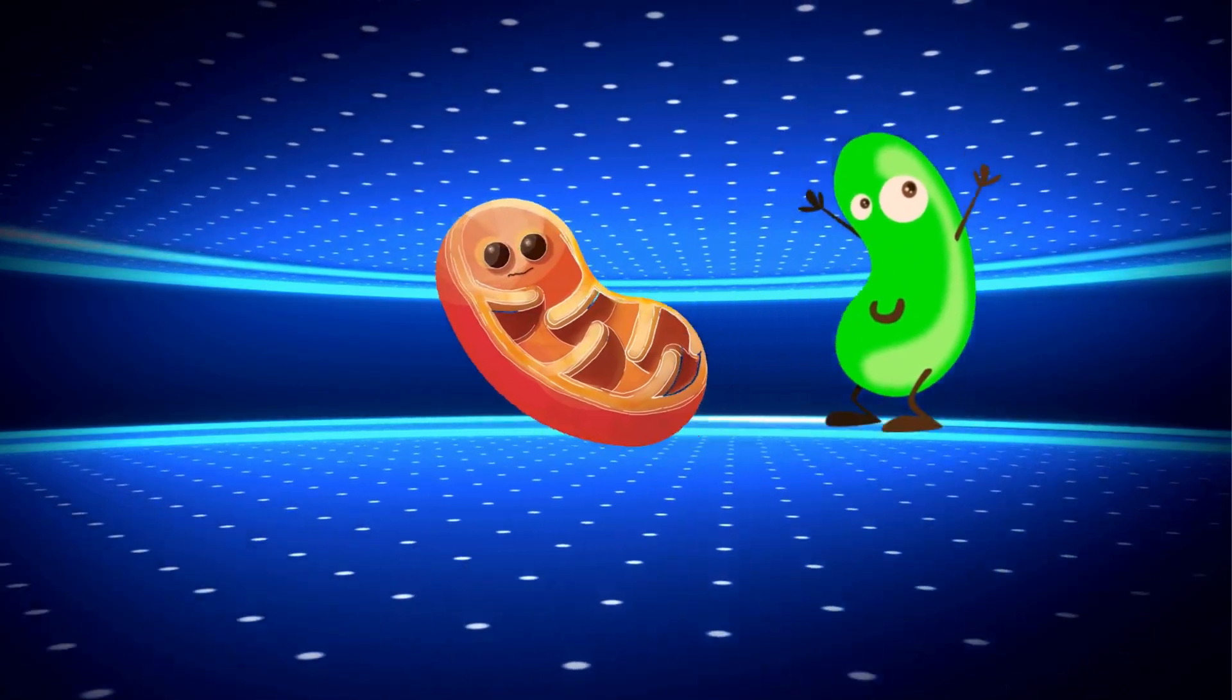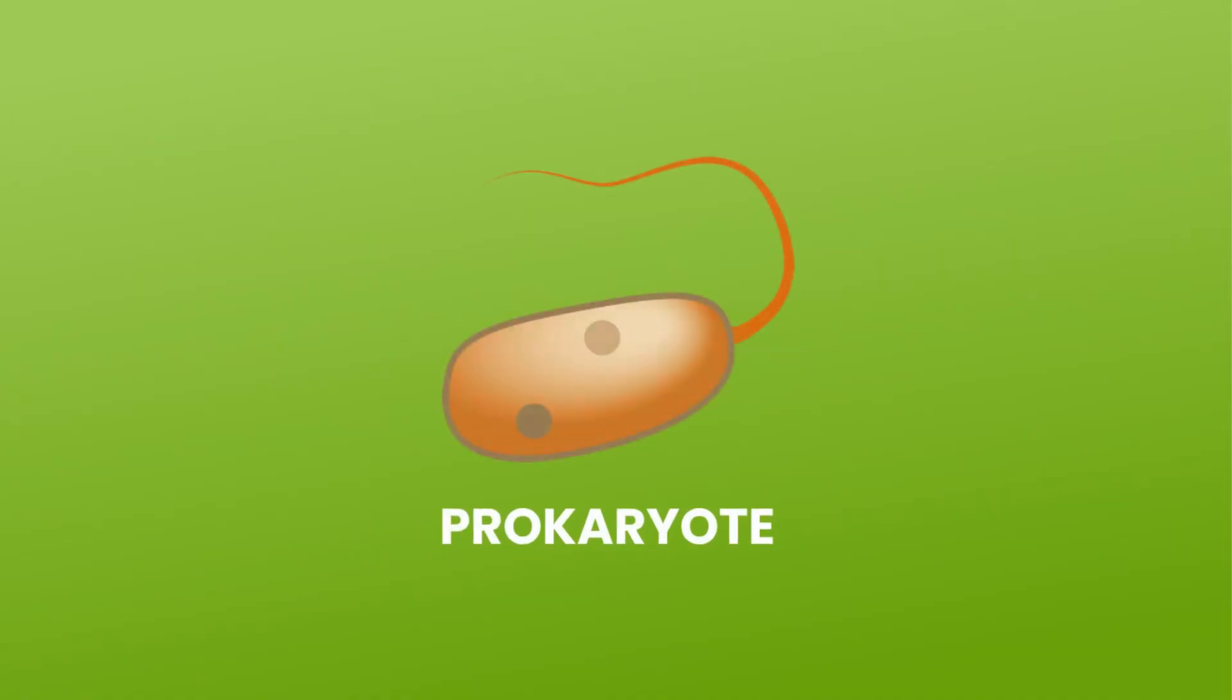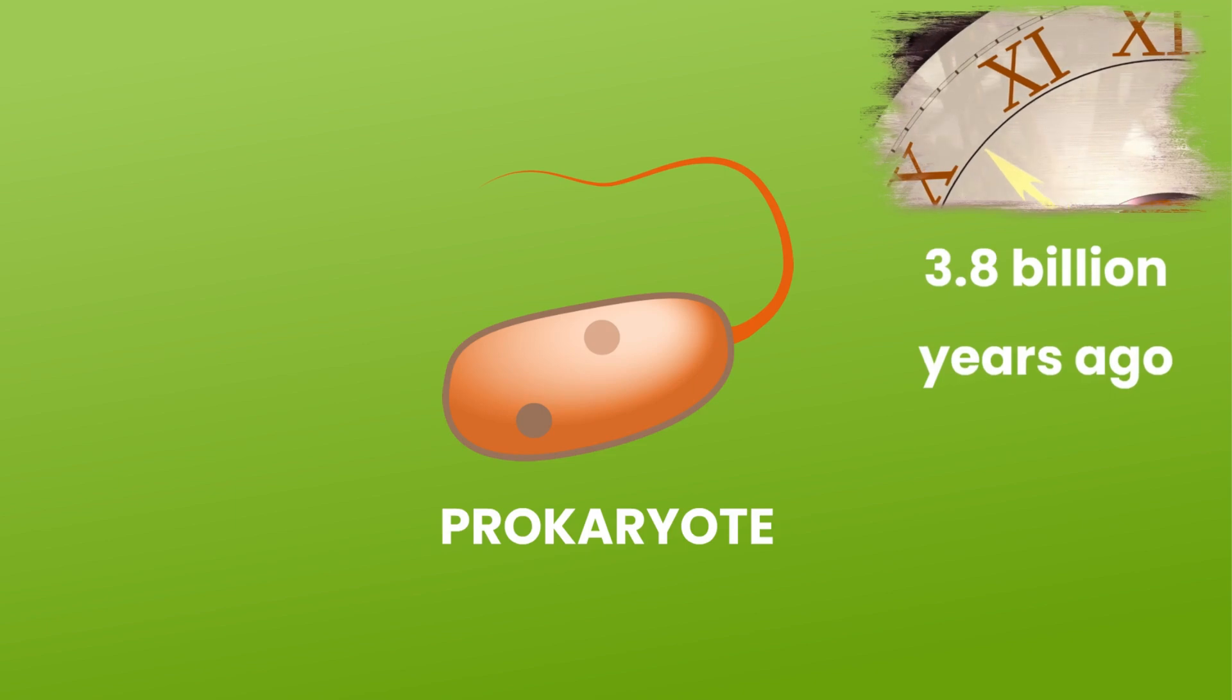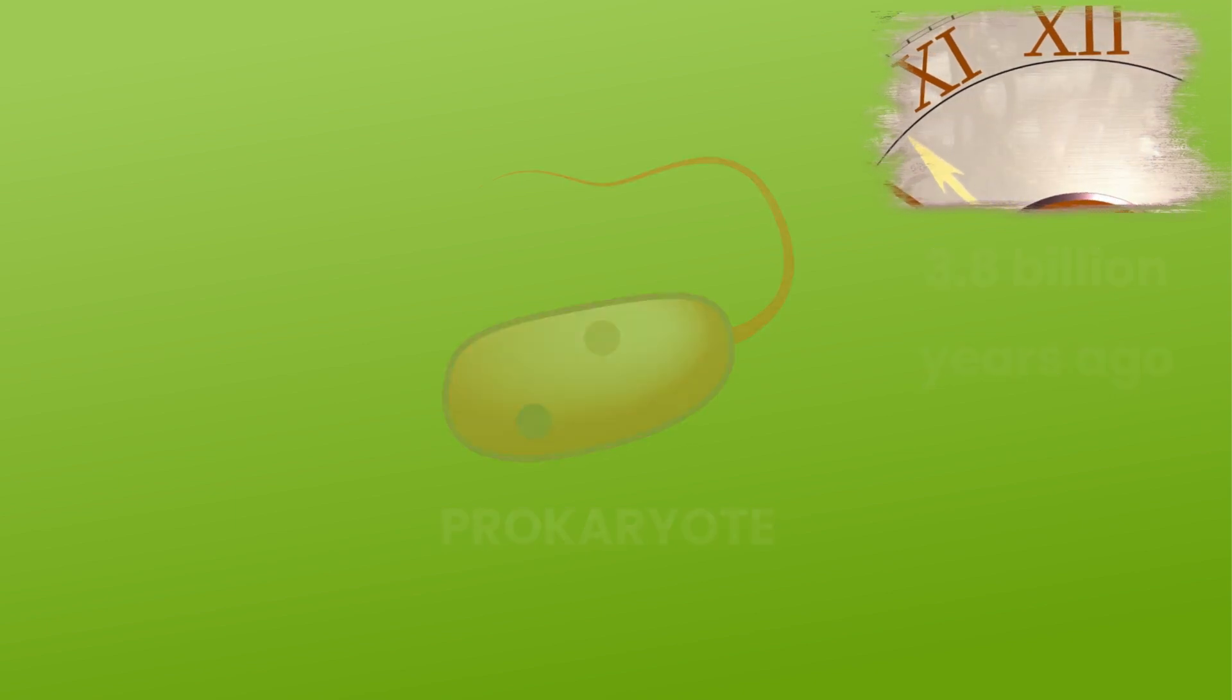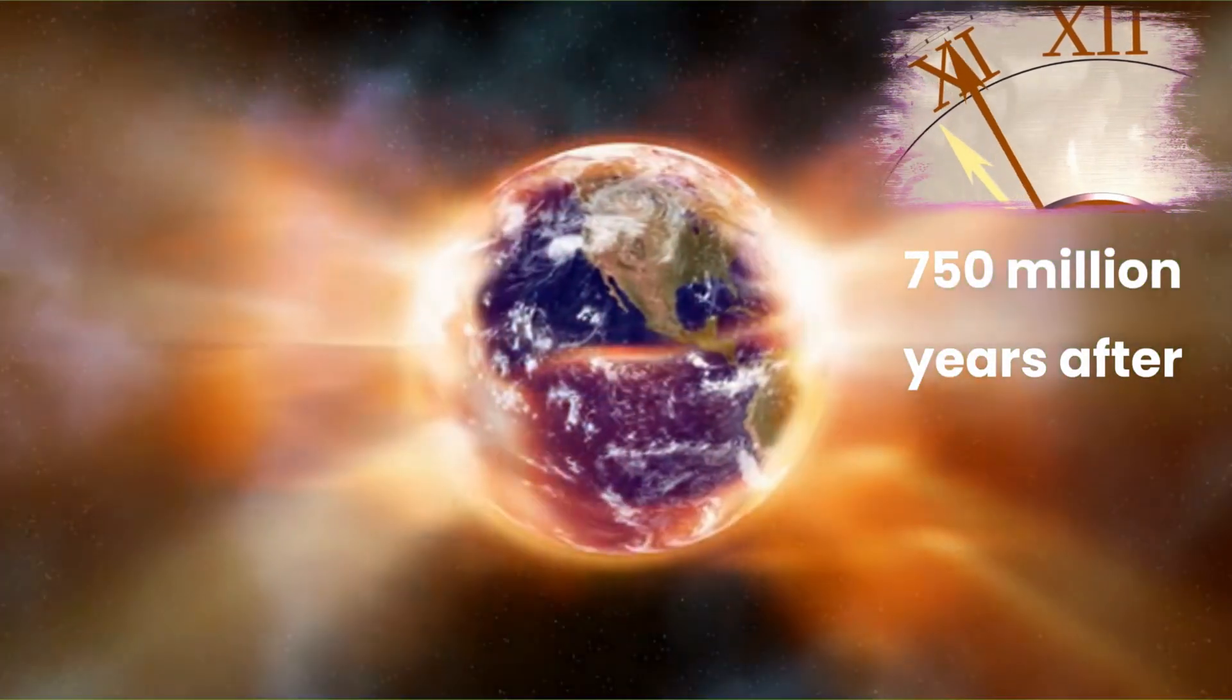The first cells on earth are thought to have appeared around 3.8 billion years ago, 750 million years after the earth's formation.